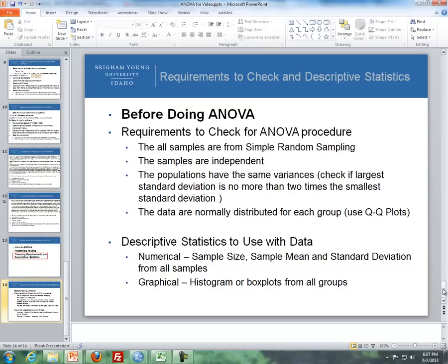So there's four different requirements that we need to have, and the last two we can check. The first one is that all the samples are from a simple random sampling. So if you were to do a study like this, you have to assume simple random sampling. Samples are independent. Now, these last two, we have to check.